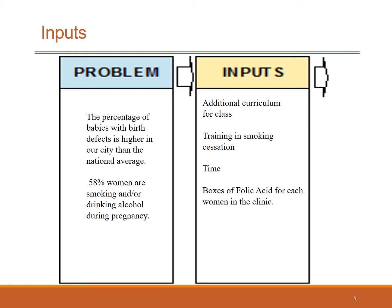First, we have the problem. You might write something like: the percentage of babies with birth defects is higher in our city than the national average. Or, looking at the data, you might find that 58% of women are smoking or drinking during pregnancy. Searching through the literature, you find that smoking and drinking behaviors may be associated with birth defects. Secondly, you write the inputs. Your class does not have a section on smoking or drinking during pregnancy, so you add curriculum to your materials, provide new training to your staff, account for extra hours of labor, and potential materials such as boxes of folic acid to decrease the risk of birth defects.